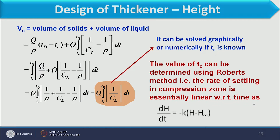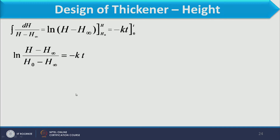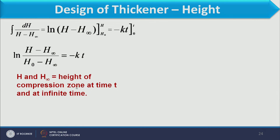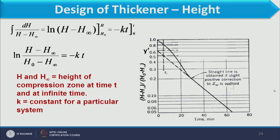The Roberts expression is dH/dt equals minus K times (H minus H∞), where H∞ is the final height of the compression zone and H is the variable height. After integrating, we get: log[(H minus H∞) / (H0 minus H∞)] equals minus K times T, where H0 is the initial height of the compression zone. Drawing this on a semi-log graph paper, we can find the K value from the slope.